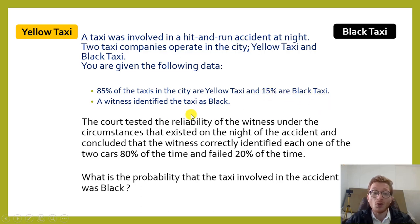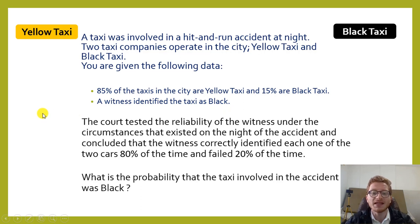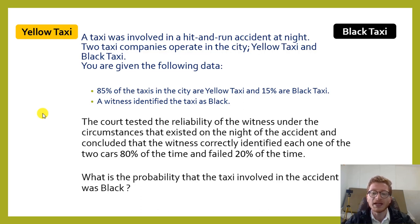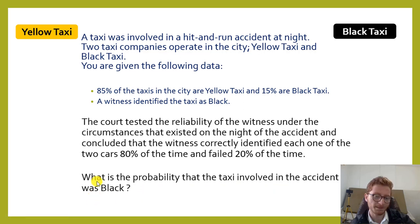A witness identified the taxi as a black taxi. The court tested the reliability of the witness under the circumstances that existed at the night of the accident, and they concluded that the witness correctly identified each of the cars 80 percent of the time and failed 20 percent of the time. The question now is: what is the probability that the taxi involved in the accident was black?